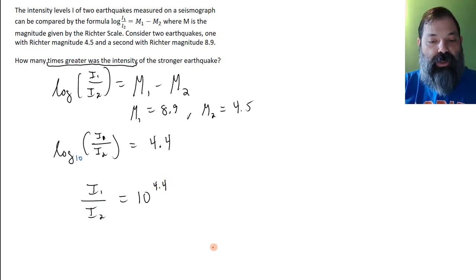So i sub 1 divided by i sub 2. Now I'm comparing those intensities. I found the ratio of those intensities, and it's 10 to the 4.4 power.